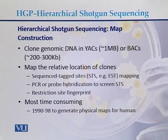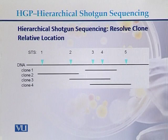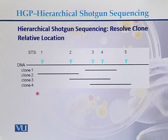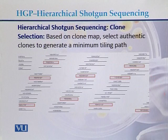Once the fragments were cloned into bacterial artificial chromosomes, physical maps for the human chromosomes were developed using all those BAC clones. To resolve the relative clone locations, clones 1, 2, 3, and 4 were aligned with the help of STS markers, and maps were prepared for each of the human chromosomes.